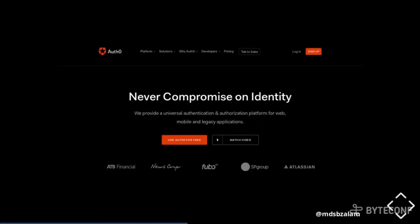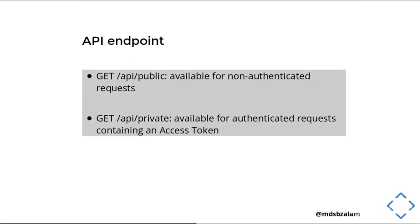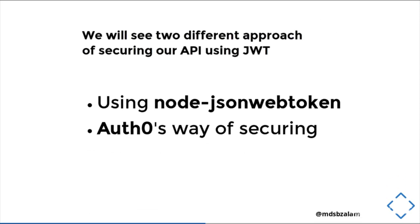I will use Auth0 as my authentication provider. The goal of today's talk is about creating two endpoints — one is public and another one is private. The public endpoint is available for non-authenticated requests and the private one is available for authenticated requests which have an access token. We will see two different approaches of securing our APIs using JSON Web Token: one using a package called Node JSON Web Token, and another is Auth0's way of securing the API.